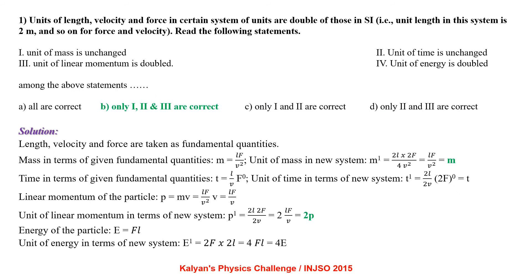Units of length, velocity and force in a certain system of units are doubled compared to SI units. That means the unit of length in this system is 2 meters, and similarly for force and velocity. We need to evaluate: whether the unit of mass is unchanged, unit of time is unchanged, unit of linear momentum is doubled, or unit of energy is doubled.